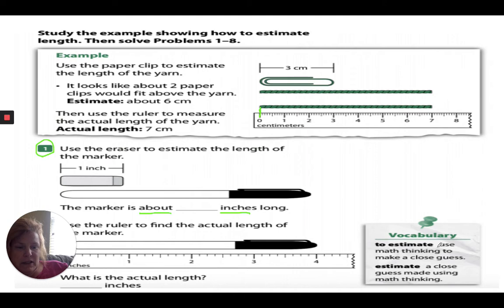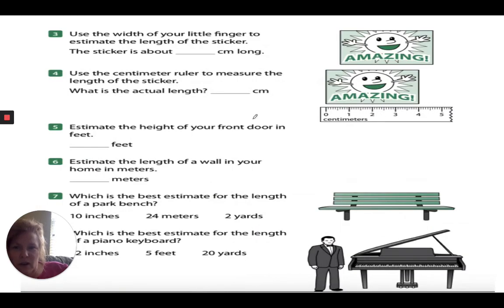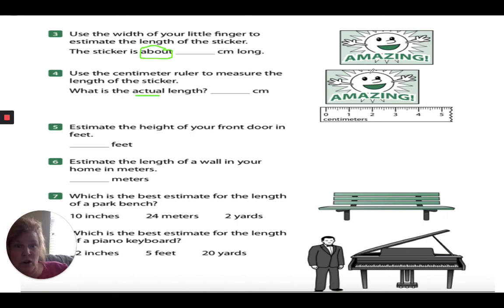So our vocabulary: to estimate is to use math thinking to make a close guess. Then you're back to centimeters — you guess with the sticker using the word 'about,' then do the actual measurement. They even gave you a ruler on the page, and they started it at zero — you don't even have to remember that. Then: estimate the length of your front door in feet. Think of your ruler and estimate how many rulers it would take to measure the height — up and down — of your door.